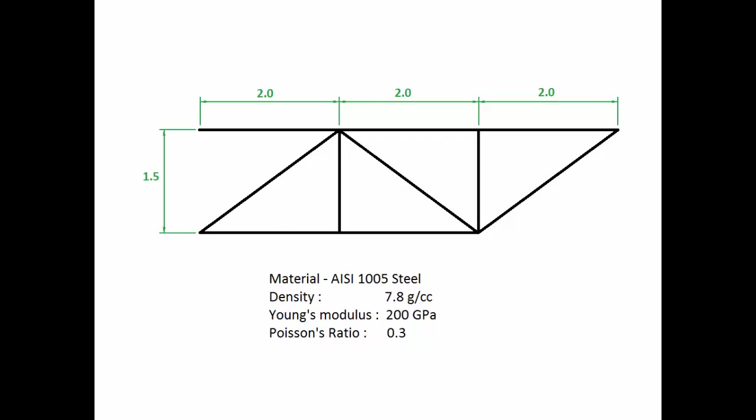The truss is made of steel with a density of 7.8 grams per centimeter cube, a Young's modulus of 200 gigapascals, and a Poisson's ratio of 0.3.